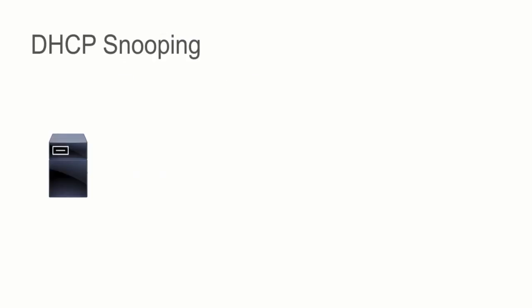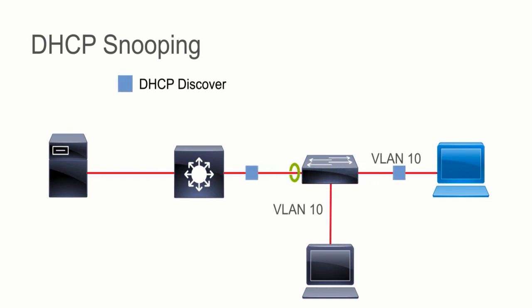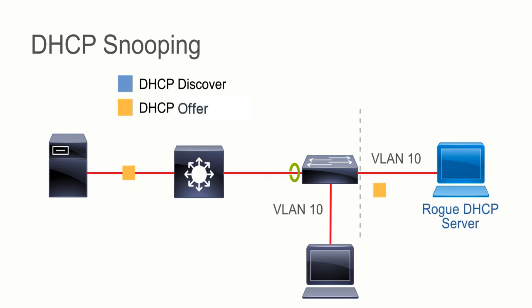One mitigation technique that we might employ to protect against this is called DHCP snooping. This is a feature for Cisco switches. What we do is we set up DHCP snooping on a per VLAN basis. Let's say that these users are on VLAN 10 — we're going to enable DHCP snooping on VLAN 10. Once we've enabled it, we have to tell it which port we trust to receive DHCP responses from; the other ports will be untrusted. So when this client sends out that DHCP discover, when that rogue DHCP server gets it and replies back, that port is not going to forward it because it's untrusted.